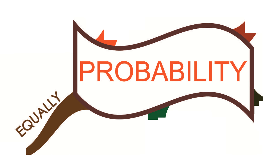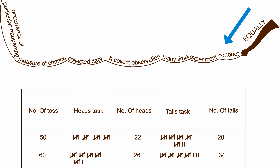Let us see our third branch — it is about equally likely outcomes. We conduct the experiment many times and collect the observations. Using the collected data, we find the measure of chance of occurrence of a particular happening. A coin is tossed several times and the result is noted.